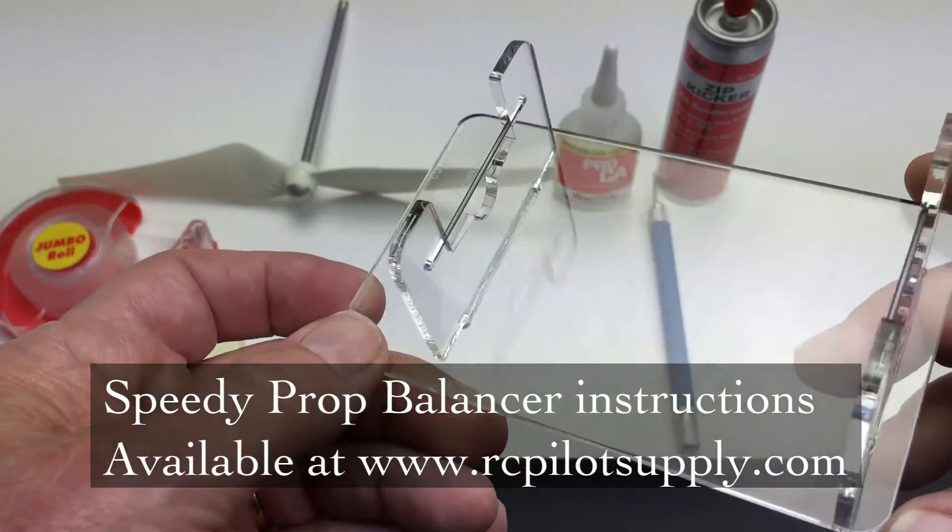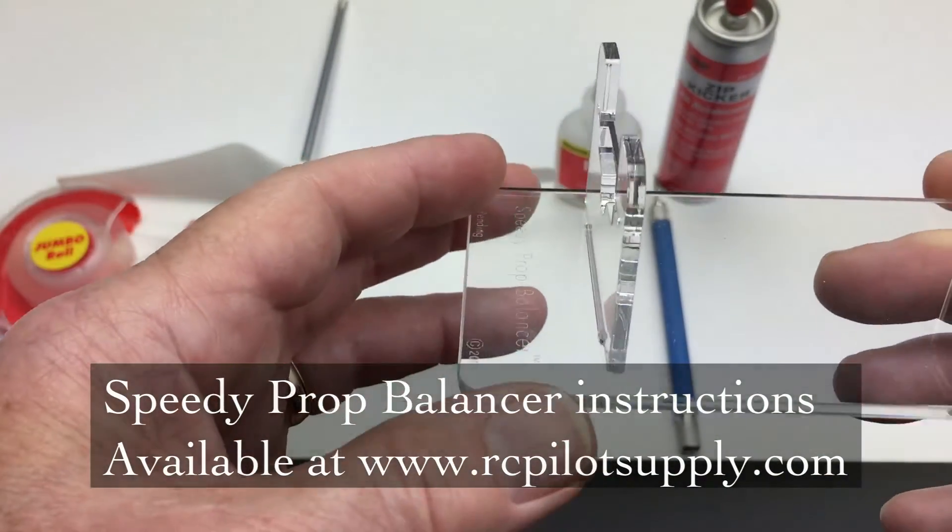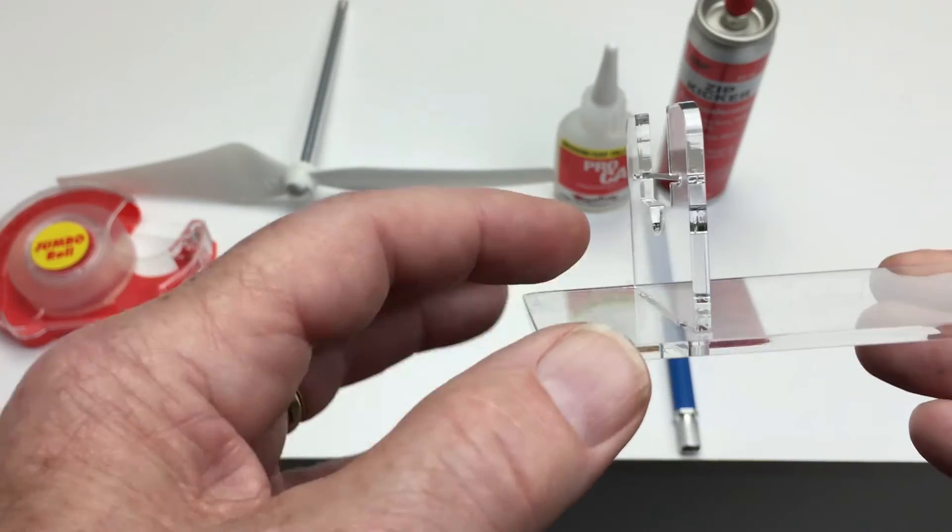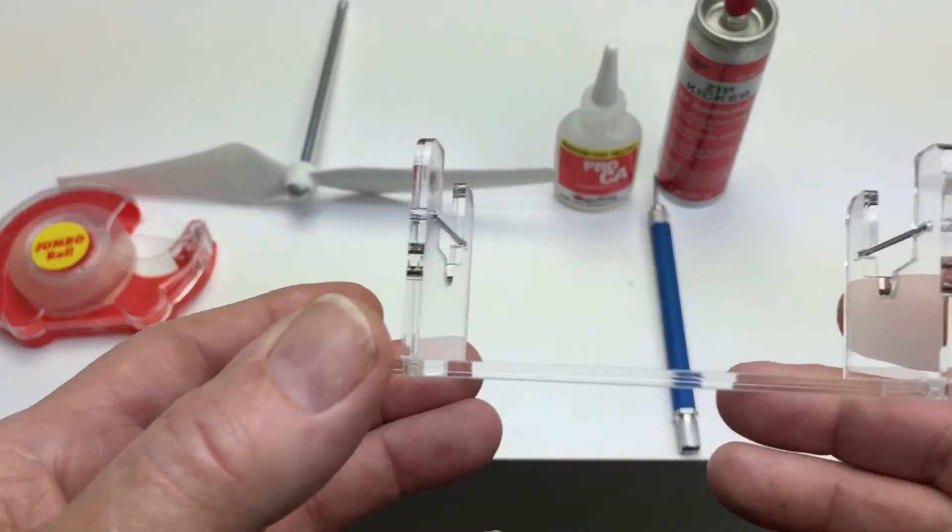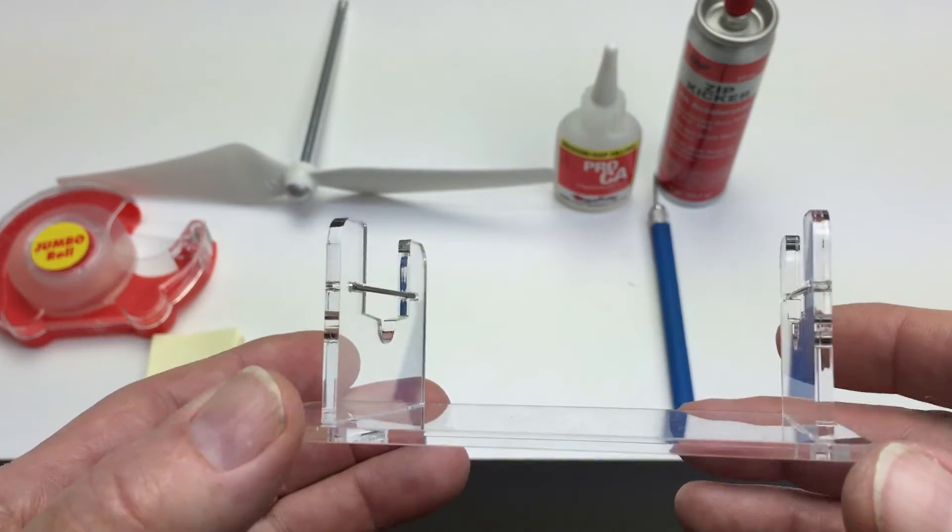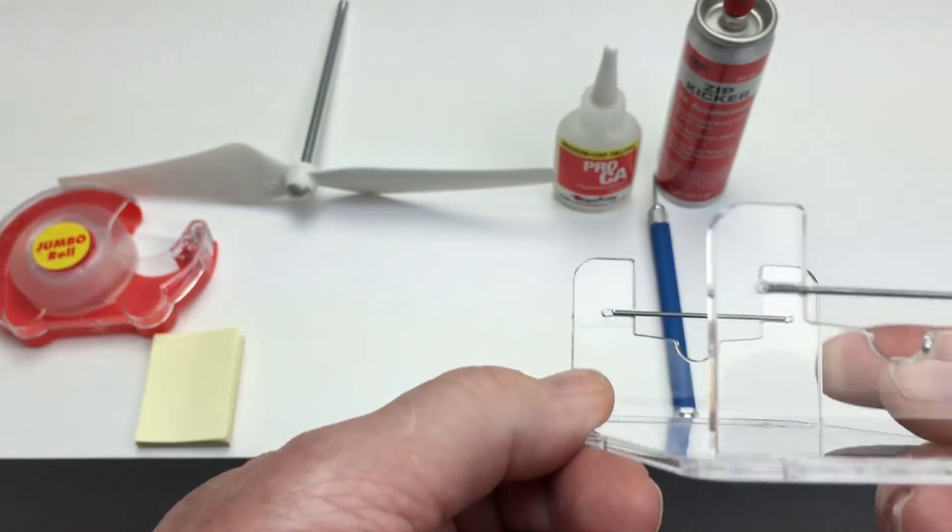This is a speedy prop balancer made from high-impact clear plastic. The uprights are exactly perpendicular to the base, and the rods are aligned exactly end to end, the same height above the base.